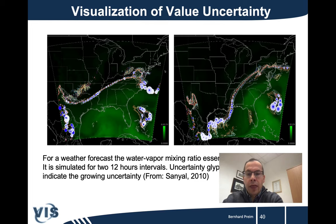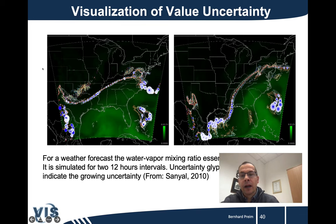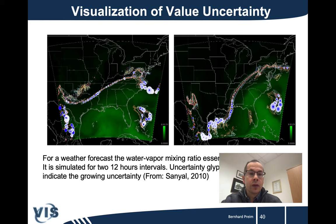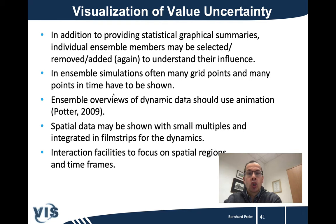Another example is a weather forecast, where the VETA vapor mixing ratio is considered, simulated for two 12-hour intervals. Uncertainty glyphs are used to convey the growing amount of uncertainty. The information is overlaid on a map of the United States — the Pacific Ocean on one side, land starting on the other — with the simulation result shown on top of this base map.